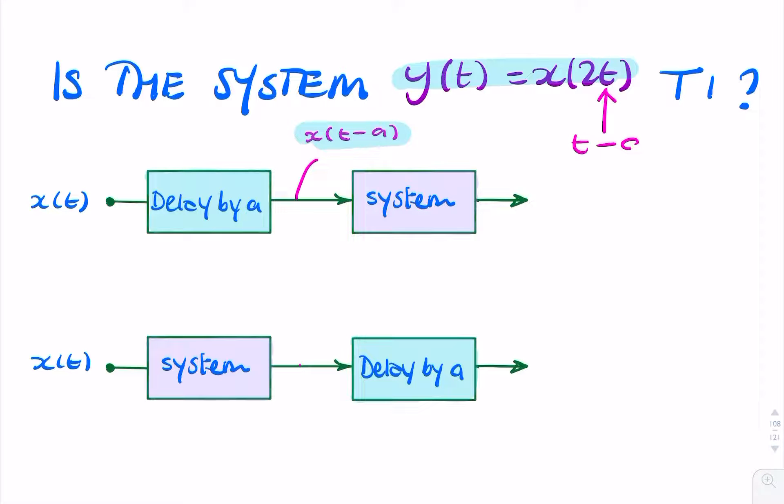will be replaced with t minus a. So I'm replacing t with t minus a. So I'll have x of 2 times t minus a. So that's x of 2t minus 2a.